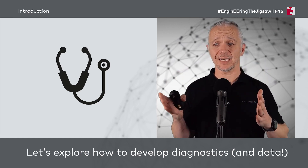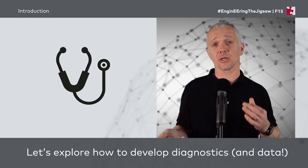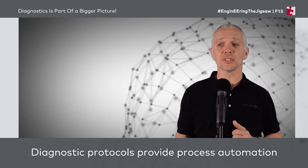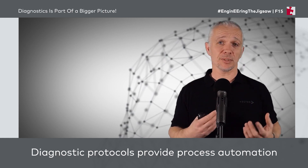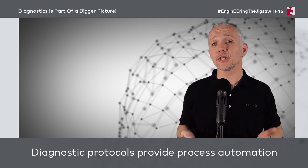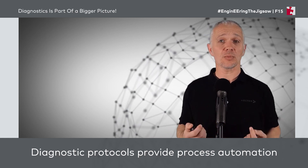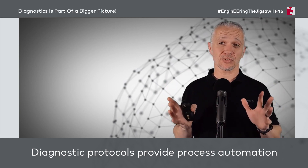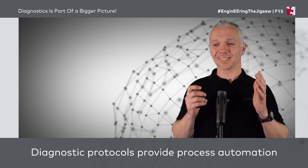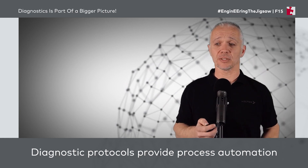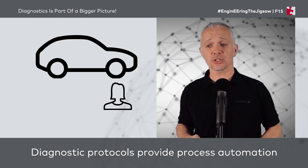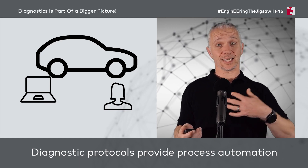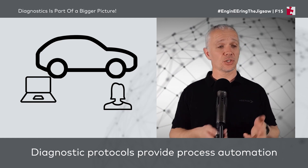Let's explore the process and think about the related data we need to gather at different steps, along with the data formats used at each step. The first thing to consider is that diagnostic protocols such as OBD or UDS are a way to achieve automation in a process. What we're automating is a set of processes based around a system which, in its simplest form, is composed of just three participants: a vehicle, a technician, and a tester — where a tester is just a fancy way of saying diagnostic tool.